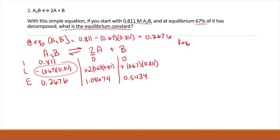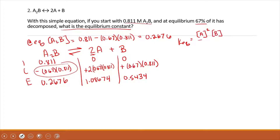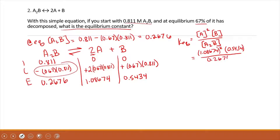Our expression for Keq here uses everything in the equation because there's nothing to say anything is a solid or liquid. We have products on top: concentration of A squared, because of the 2 in its stoichiometry, times the concentration of B, divided by the concentration of A2B. That equals 1.08674 squared times 0.5434, divided by 0.2676. Our Keq equals 2.398.